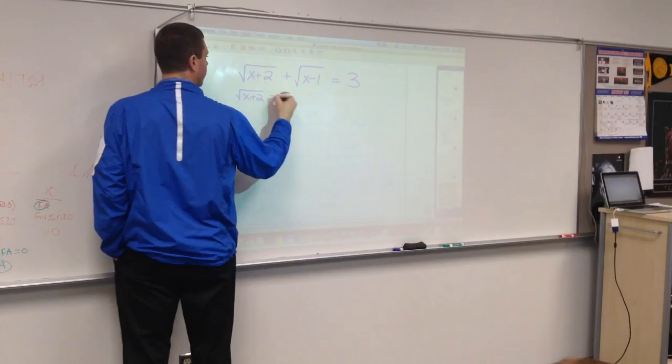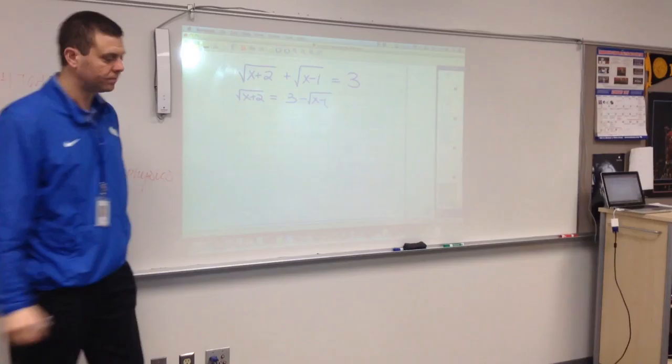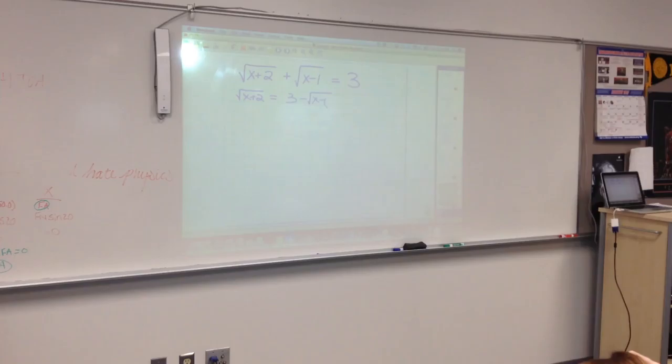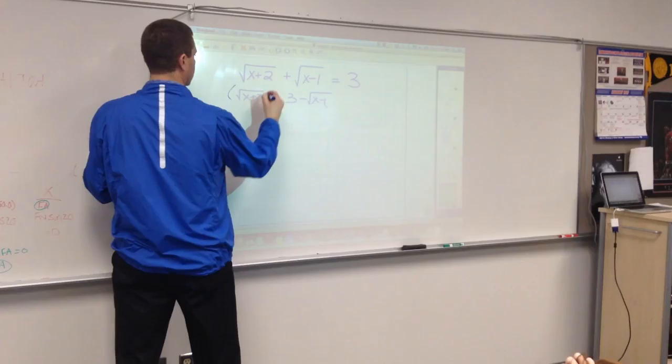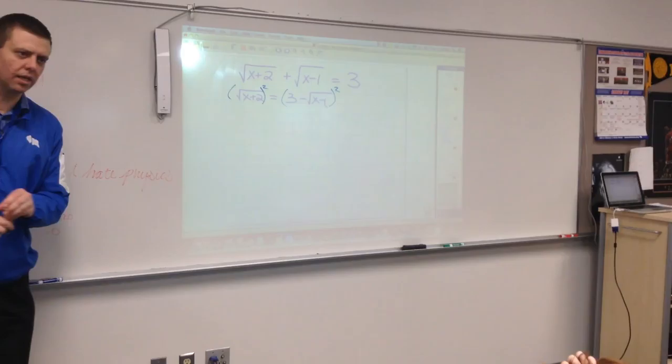So I got the square root of x plus 2 equals 3 minus the square root of x minus 1. I subtracted the square root of x minus 1 from both sides. Then I'd square both sides. Left side's simple. It just becomes x plus 2.